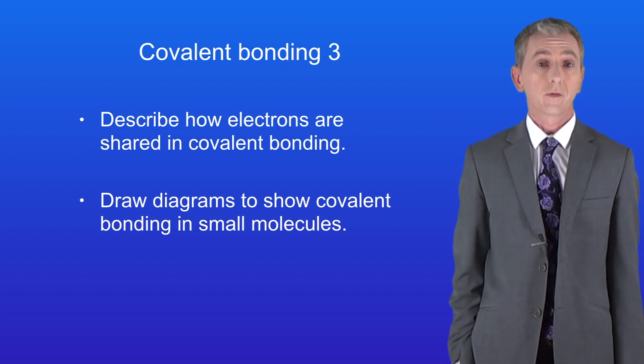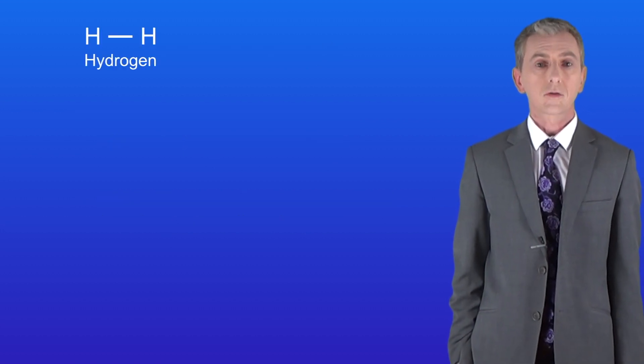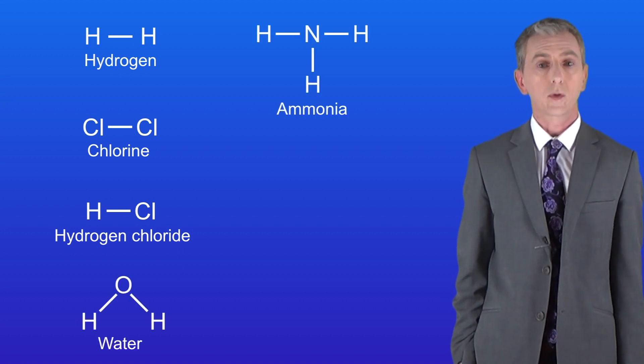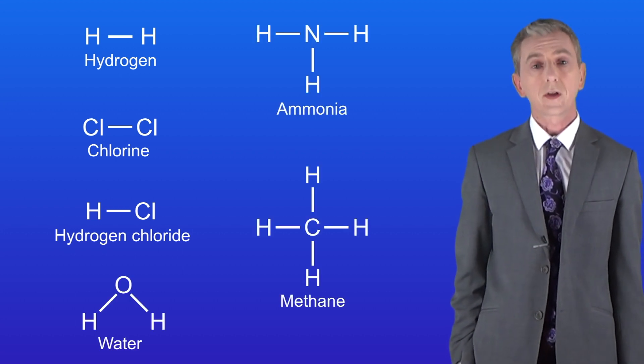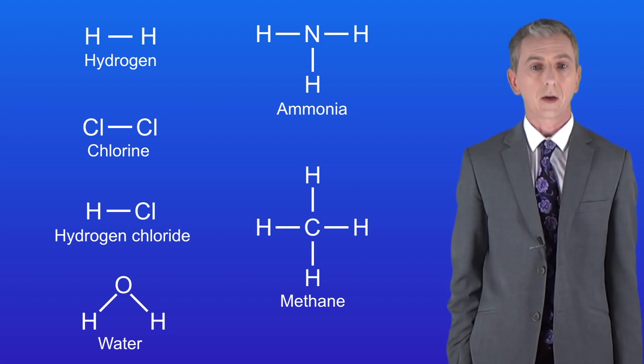In the last couple of videos we've been looking at small covalent molecules. We've seen the molecules hydrogen, chlorine, hydrogen chloride, water, ammonia and methane. As you can see all of these molecules have got single covalent bonds. In other words a shared pair of electrons.